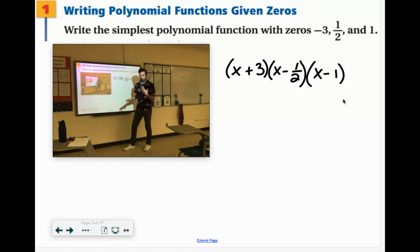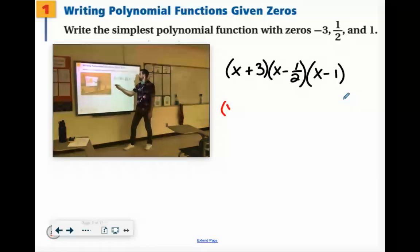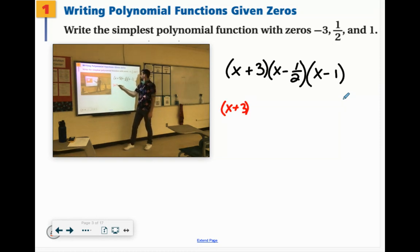Now we can multiply them in any order. I would suggest leave the x minus 1 half until later. So I'm going to do the x plus 3 times the x minus 1 first. And then I'll bring in the x minus 1 half. But they'll all work.